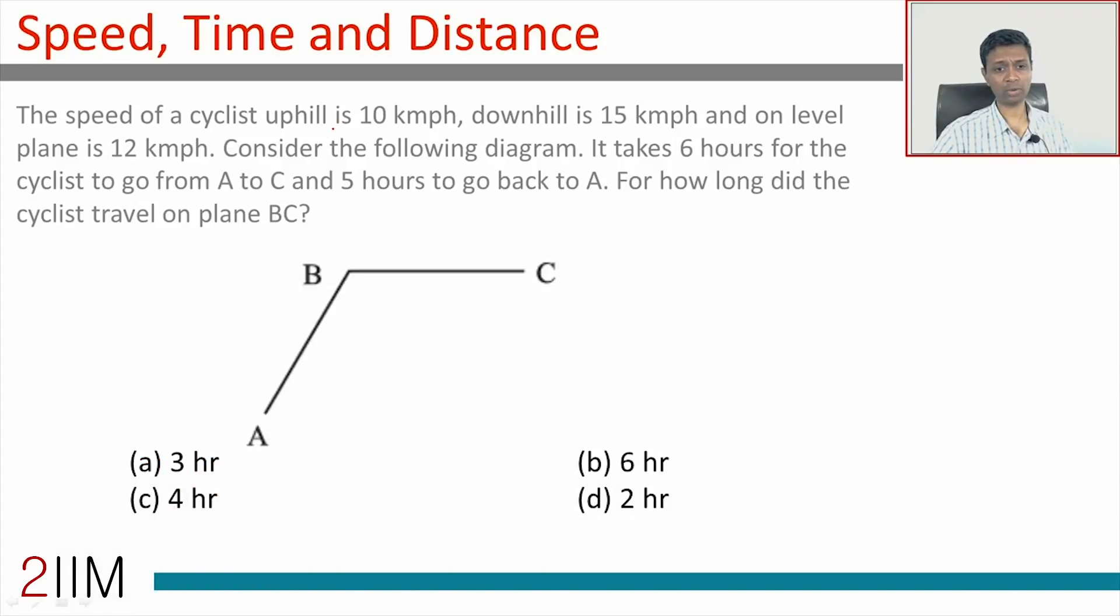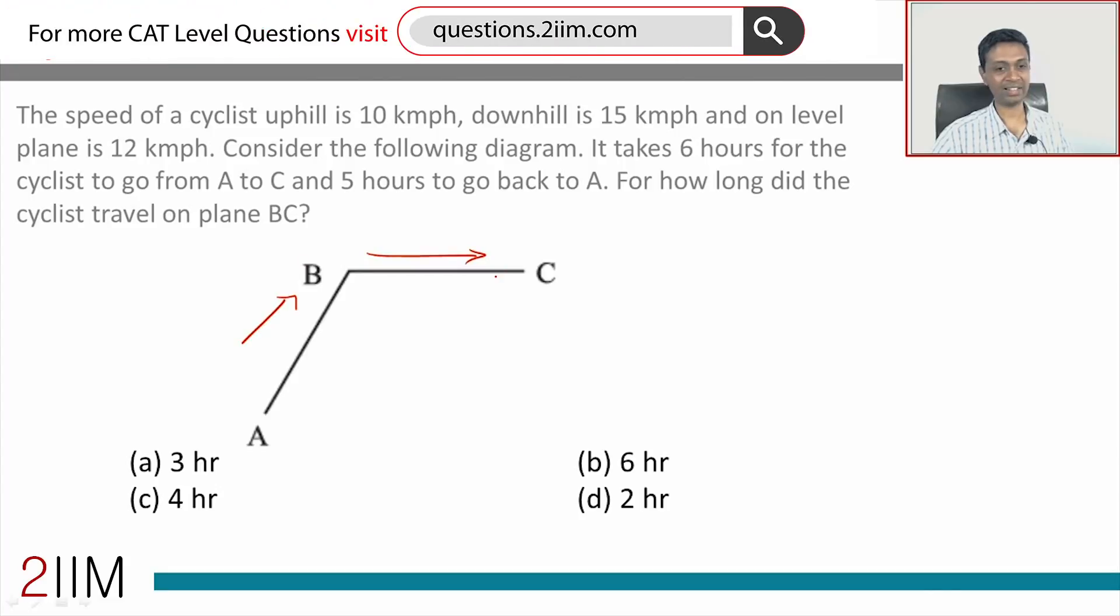It takes six hours for the cyclist to go from A to C and five hours to go back to A. So he's traveling uphill here and uphill here and flat there. It takes him six hours. Flat here and downhill here will take him five hours.